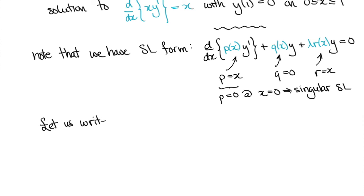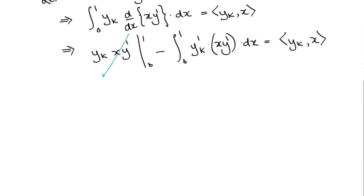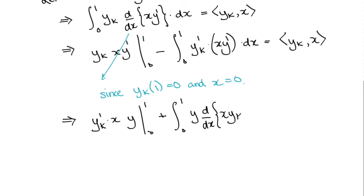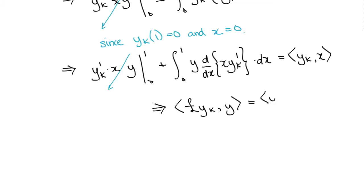Now let's write the forced boundary value problem under consideration by l of y being x. We use the standard trick of taking the inner product with one of the eigenfunctions yk. Integration by parts then gives us the boundary terms, which are 0 by the boundary conditions, and the inner product of the adjoint, which is the original ODE since the problem is self-adjoint. This leaves us with the inner product of l, yk, and y is equal to the inner product of yk and x.